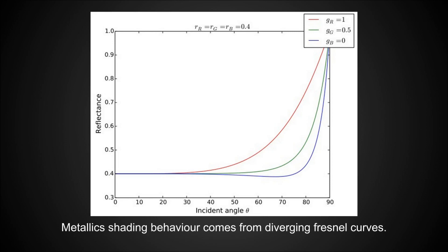The reason why metallics can have an edge tint is that the way metallics tint their reflections is by having a different Fresnel curve depending on what frequency of light they're hit with — different Fresnel curves for red, green, and blue and different colors of the spectrum. So red light might not have the same Fresnel values as blue light. This is a curve that goes from a relatively gray color and splits into an orangey-looking color at grazing angles.